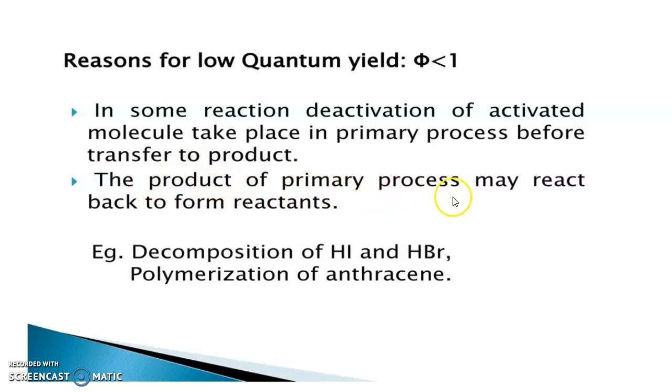And also, the product of primary process may react back to form reactants. The products will undergo irreversible or a reversible reaction to give back reactants. Product will undergo reversible reaction to give reactants. For example, decomposition of hydrogen iodide and HBr. And also, polymerization of anthracene is an example for low quantum yield.